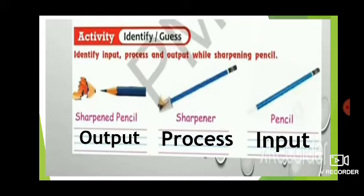Now the next question: identify input, process, and output while sharpening a pencil. Images are given and you have to identify which one is input, which one is process, and which one is output. The sharpened pencil is the output. The sharpener is the process. The pencil is the input.